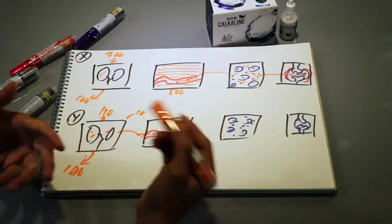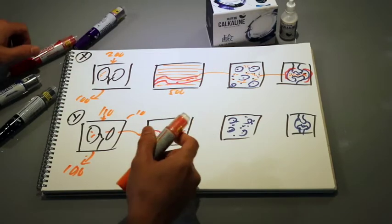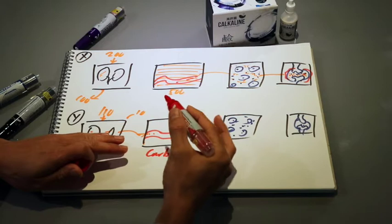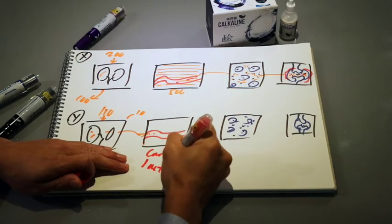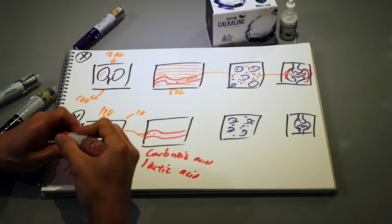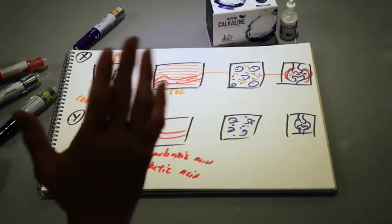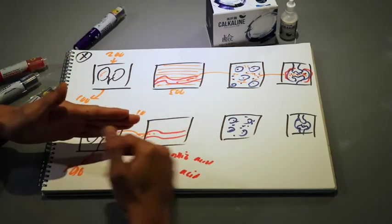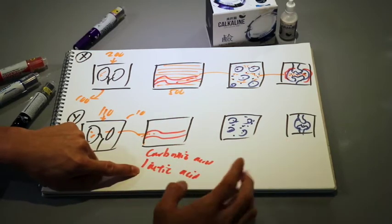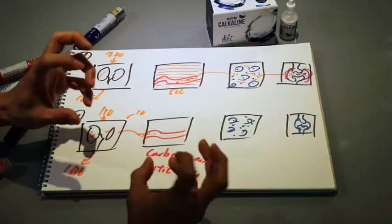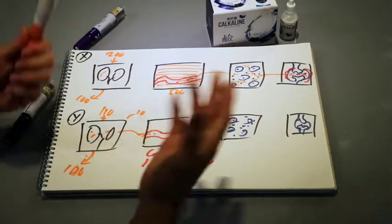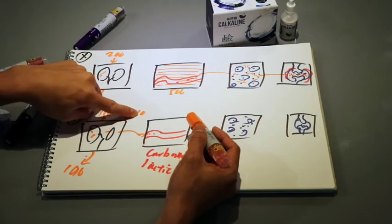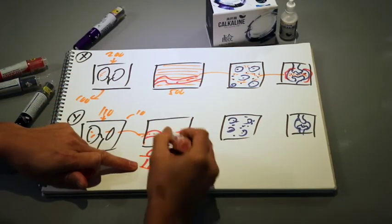But the problem is your body doesn't only have one type of acidic waste — uric acid. It has many other acidic wastes, such as carbonic acid — which is carbon dioxide dissolved in liquid — and lactic acid, produced by your muscles under extreme stress, especially during intense exercise. Your blood is actually a buffer zone: carbonic acid is sent to the lungs to be discharged, and lactic acid is sent to the liver to be broken down and disposed of.